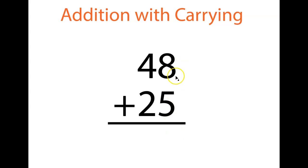Now, what do we do? We add the ones column first. When we add eight plus five, what do we get? We get 13, so we're gonna put the three and carry the one.